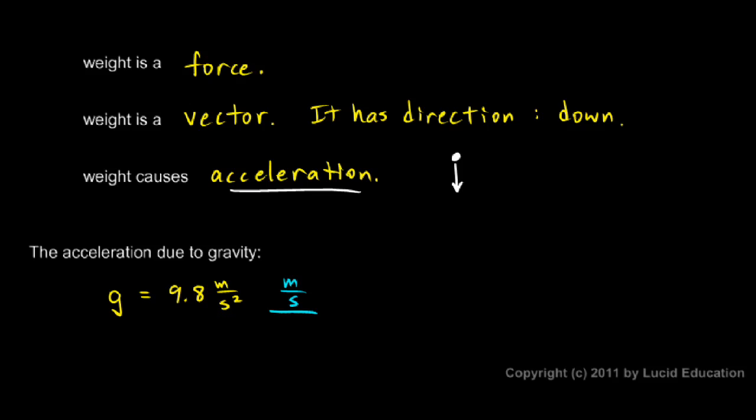If you drop something, it gains speed at that rate. It picks up speed at a rate of 9.8 meters per second each second. So if you release it, it's still when you drop it. After one second, it has reached a speed of 9.8 meters per second. After two seconds, it will have reached a speed of 19.6 meters per second, twice that. And every second, it gains 9.8 meters per second of speed.